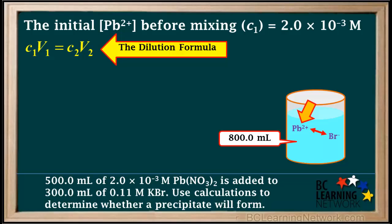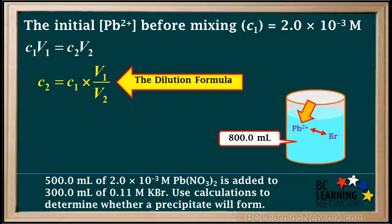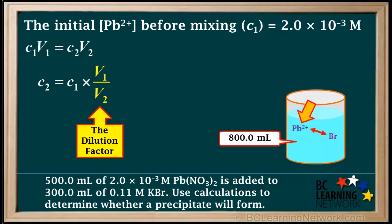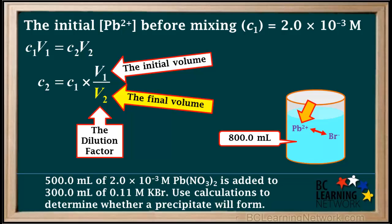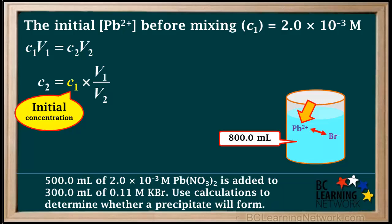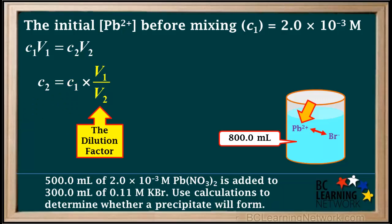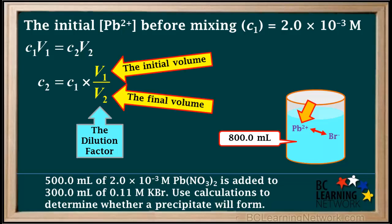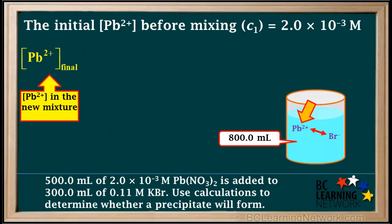C₂ and V₂ are the final concentration and volume. Solving for the final concentration C₂, we get C₂ = C₁ × (V₁/V₂). The ratio V₁/V₂ is called the dilution factor — always the initial volume over the final (total) volume V₂. So to find the final concentration C₂ of an ion after mixing two solutions, we take the initial concentration C₁ and multiply it by the dilution factor V₁/V₂, or the initial volume over the total volume.